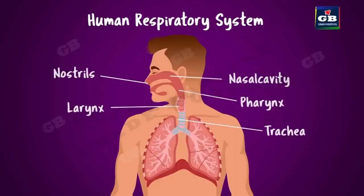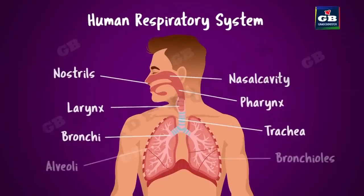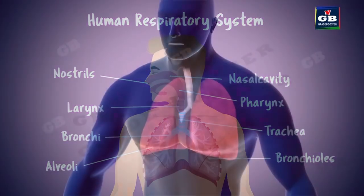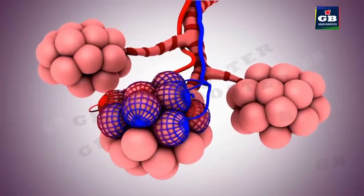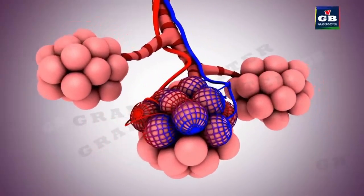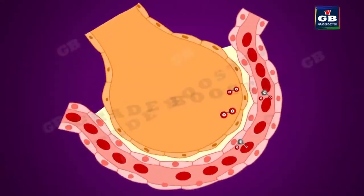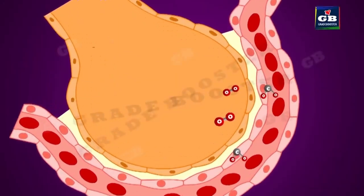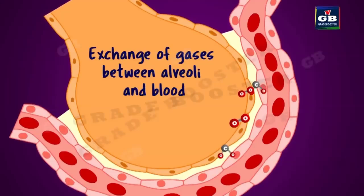The windpipe divides into two branches called bronchi, which are further divided into fine branches called bronchioles. Finally, these bronchioles are attached to small balloon-like structures called alveoli. The wall of the alveoli has a network of blood capillaries, where the exchange of gases takes place between the blood and the alveoli.